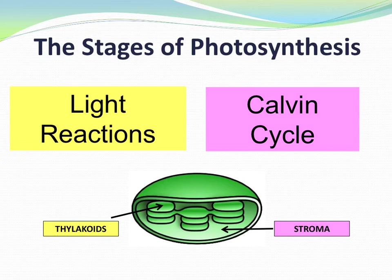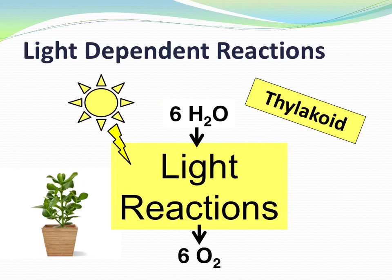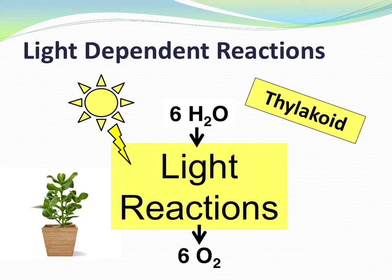Let's consider the big picture of just the light reactions first. The light-dependent reactions are just that — dependent on light — and they can't happen without it. It's here where chlorophyll absorbs solar energy, and plants use the water they absorb through their roots. In these reactions, oxygen gas that we enjoy breathing is also created. All of this happens in the thylakoid membranes.